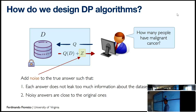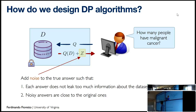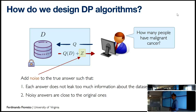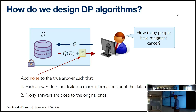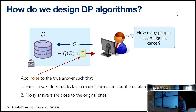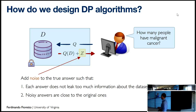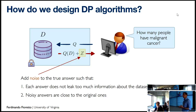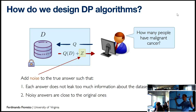So how do we design differentially private mechanisms? An interactor interacts with our dataset by giving a function q, and the dataset responds with an answer q(D). What we would like to do is add some noise, calibrated appropriately, so that each answer does not reveal too much information about the dataset, while the noisy answers remain close to the original ones. We want to retain privacy on one hand and accuracy on the other.